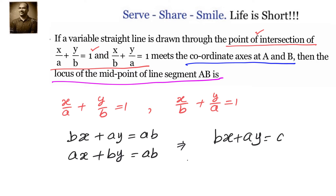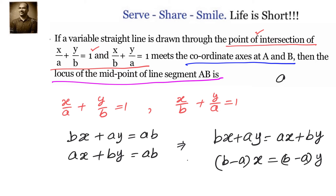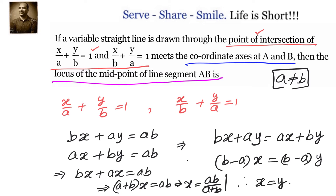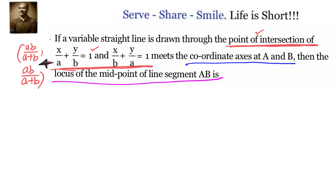Writing bx + ay = ax + by and simplifying gives (b − a)x = (b − a)y. Since a ≠ b, we conclude x = y. Substituting into the first equation: bx + ax = ab, so (a + b)x = ab, giving x = ab/(a + b). Since x = y, both coordinates are ab/(a + b). So the point of intersection is (ab/(a+b), ab/(a+b)).